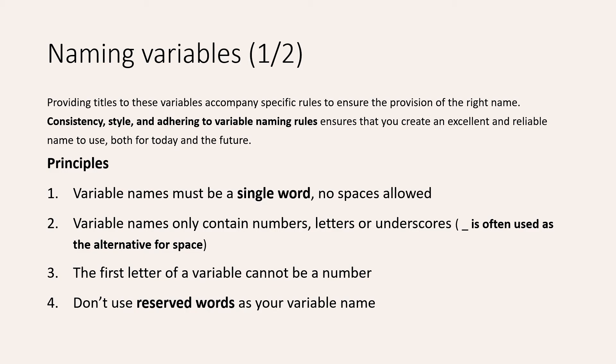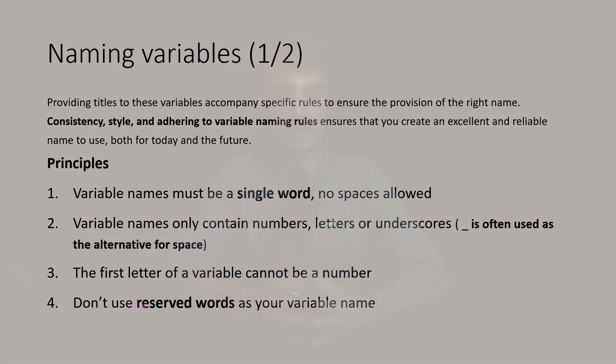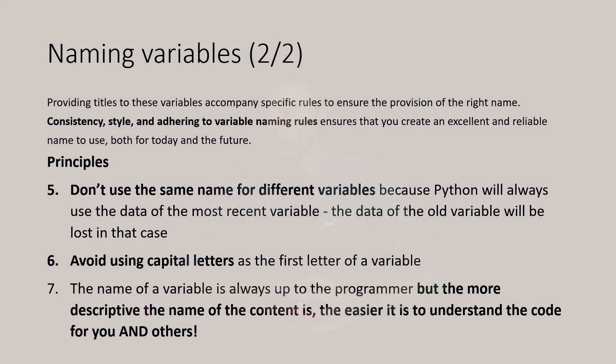Rule four: don't use reserved words as your variable name. We have a slide on that after the next slide, so give me just another minute and I will explain what reserved words are. Number five: don't use the same name for different variables, because Python will always use the data of the most recent variable.